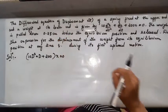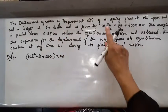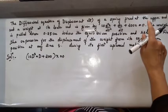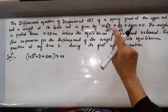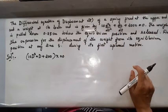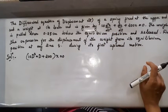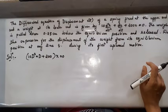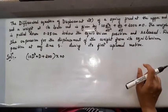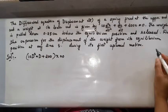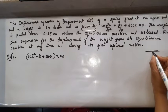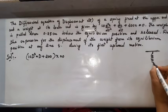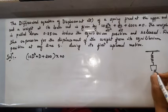The problem states: the differential equation of the displacement of a spring fixed at the upper end with a weight at its lower end is given by 10 d²x/dt² plus dx/dt plus 200x equals 0. The weight is pulled down 0.25 centimeters below the equilibrium position and released. There is a fixed point, the spring is attached, and at the other end there is a load.